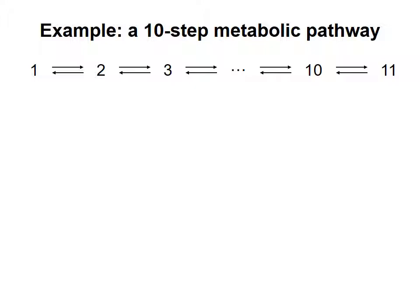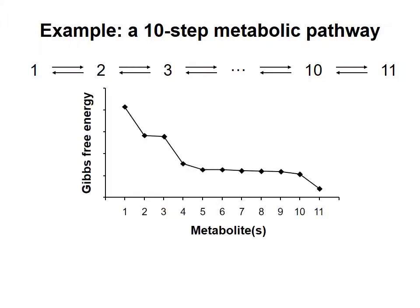To illustrate the changes in Gibbs free energy along the pathway, we could draw a diagram similar to a reaction coordinate diagram in which the metabolites are numbered from 1 to 11 along the x-axis and the y-axis represents Gibbs free energy.